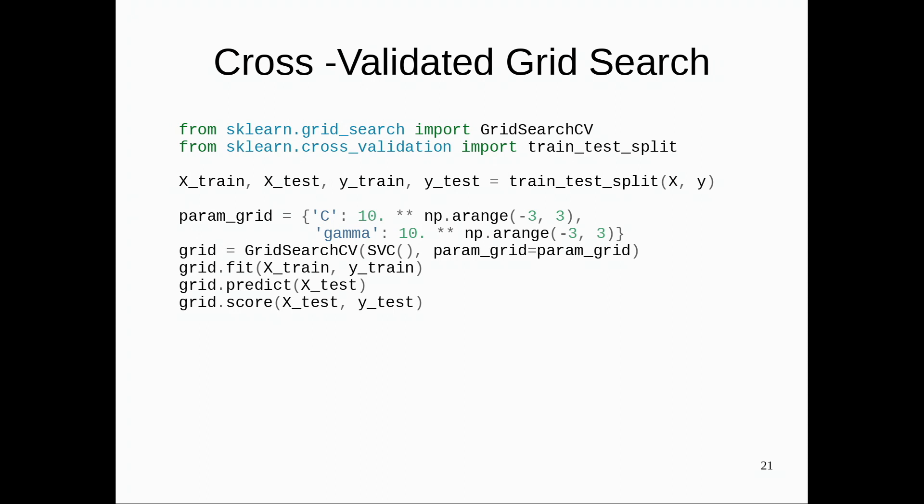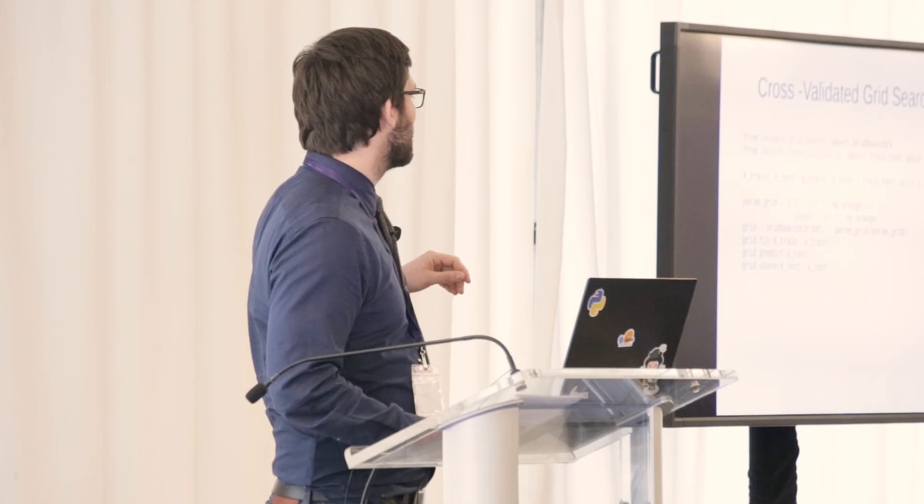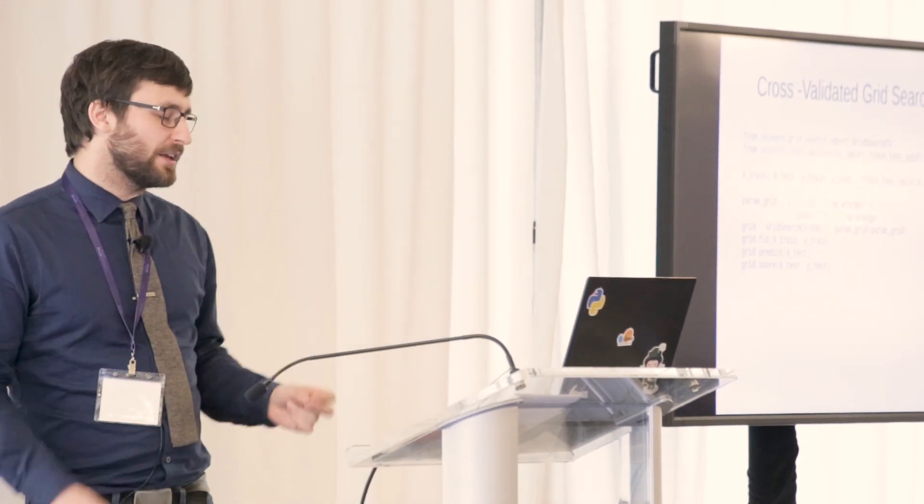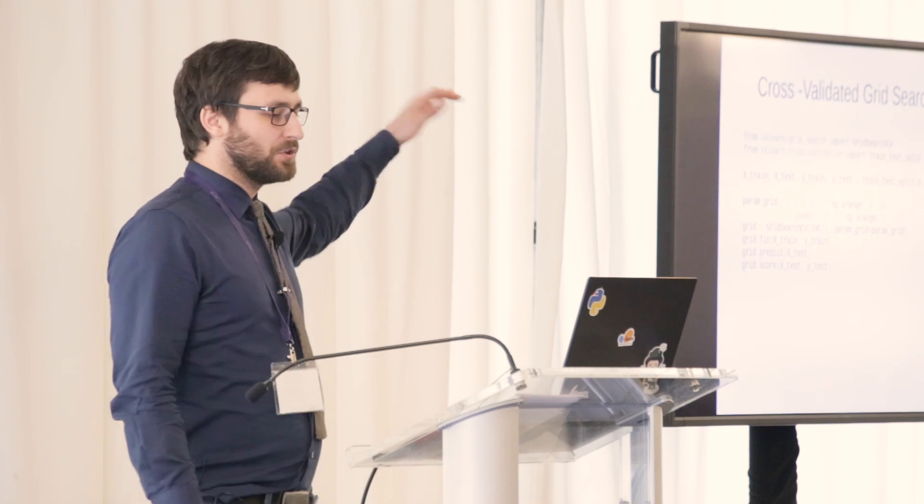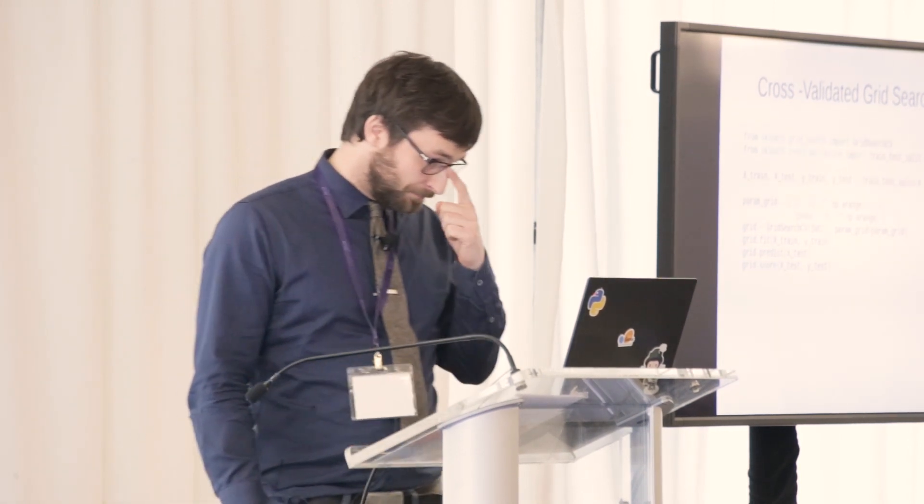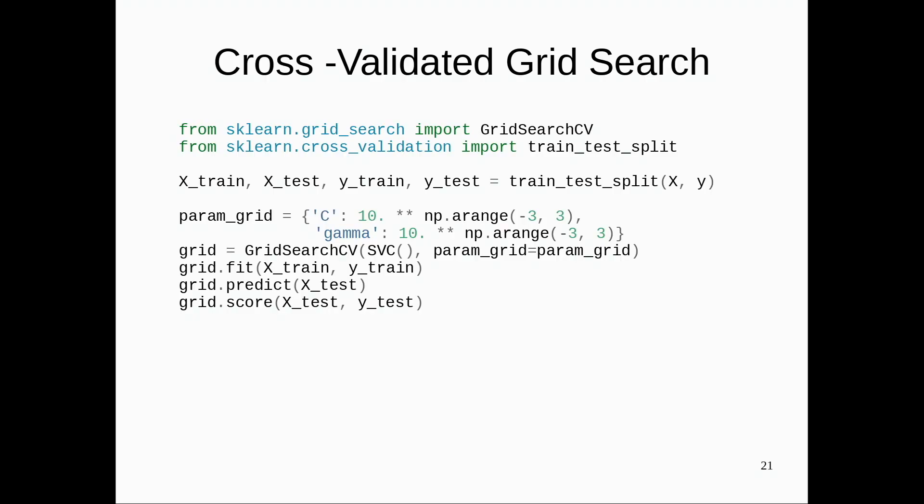And then use this best model and retrain this model on the whole training set. So after I did this grid search, it retrains the model with the best parameters. And so this allows me then to make predictions. So here you see, again, this is very geared towards making predictions. It's very easy to search parameters and then make predictions with this model on new data. So this is pretty convenient, I think.